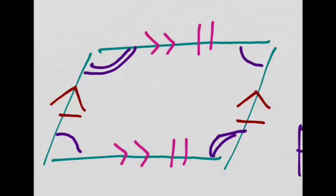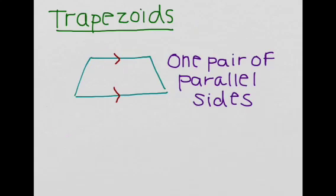I also realize that these opposite angles are also congruent. So this angle right here is congruent to this angle right here, and this angle right here is congruent to this angle right here.